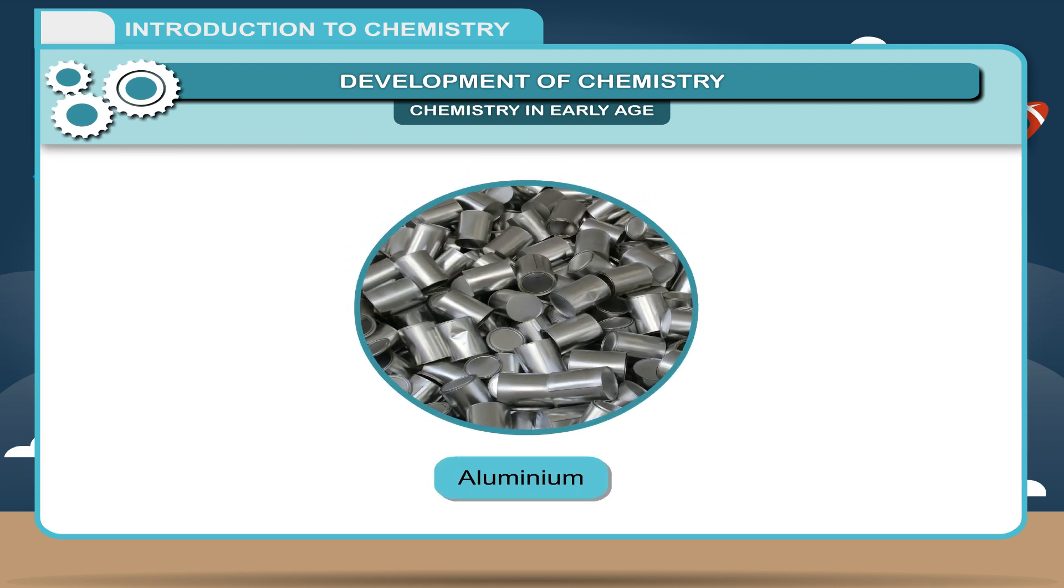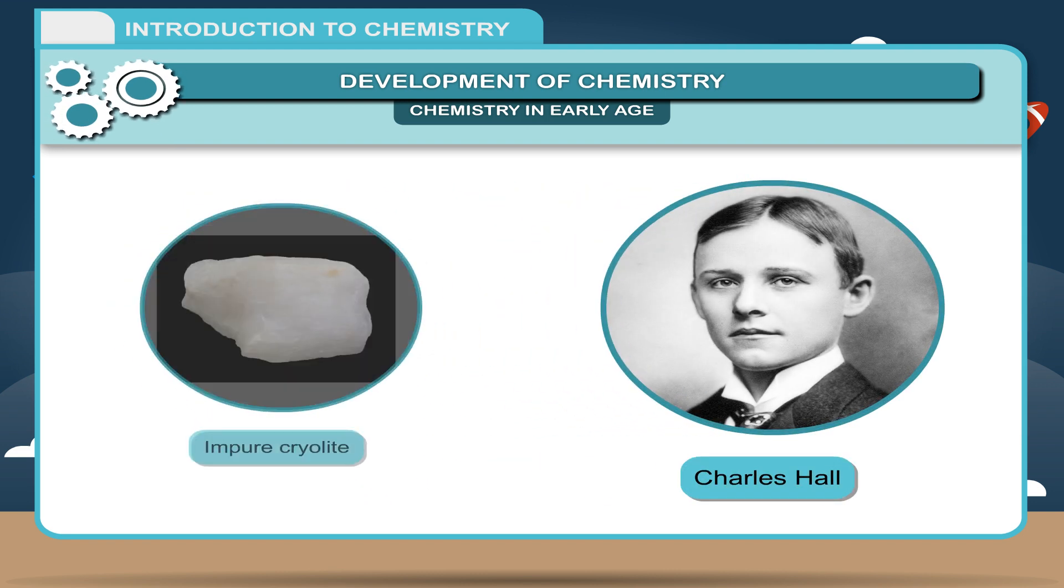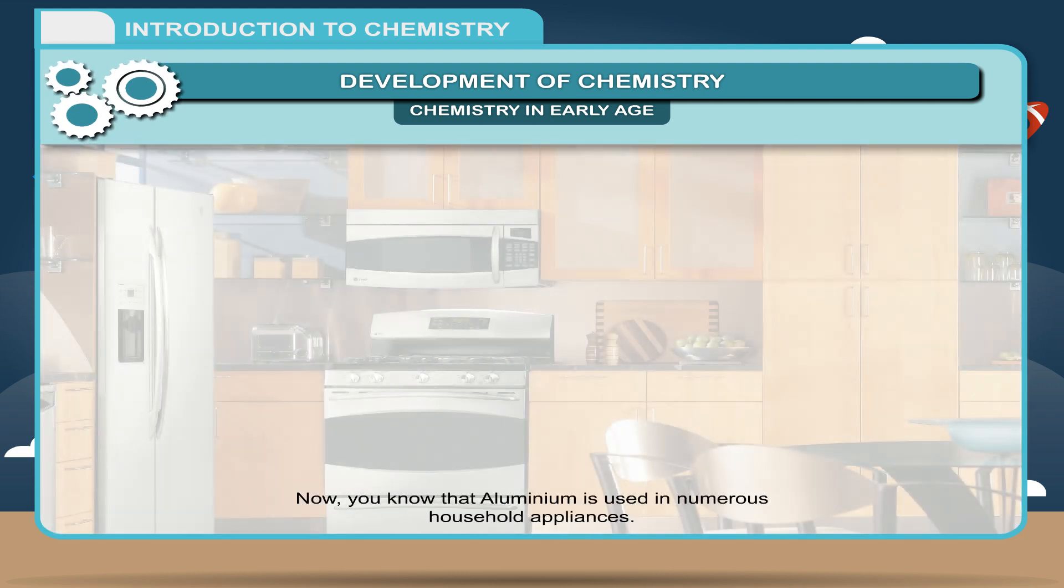Earlier, due to the cost of its extraction, aluminium was very costly. But Charles Hall discovered that if an impure cryolite was added to aluminium oxide, its extraction could be done very easily. Now, you know that aluminium is used in numerous household appliances.